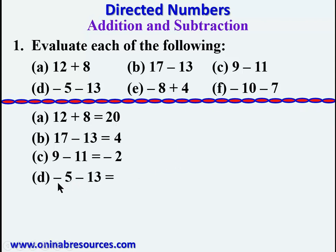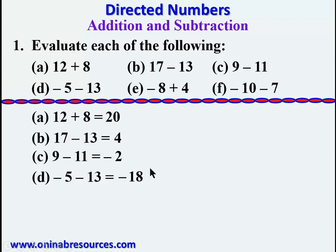For part d: negative 5 minus 13. Let us look at the numbers individually. This is negative 5 and this is negative 13. Both of them are negative, so we bring in the negative sign and then add the individual numbers: 5 plus 13 gives 18. Therefore negative 5 minus 13 gives negative 18.